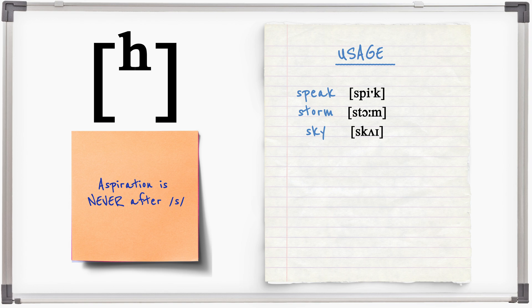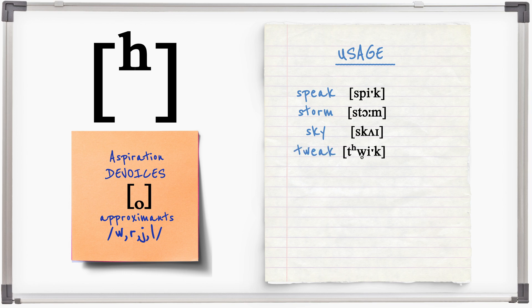When aspiration occurs before an approximant, W, R, Y, L, the approximant will be de-voiced. Tweak, Przy, Tune, Clue.